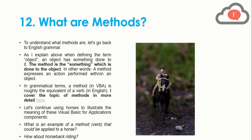Let's continue using the horse to illustrate this VBA component. An example of a method applied to a horse would be horseback riding. The horse is the object, its color and size are its properties, and riding the horse is the method. I hope this complete example of a horse clarifies the concepts of objects, methods, properties, collections, and classes.